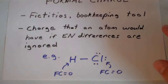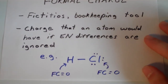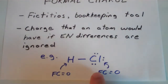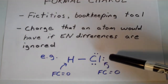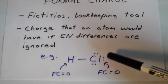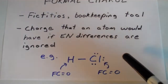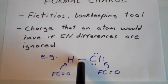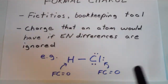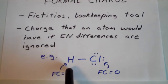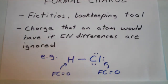Going back to the case of hydrogen chloride: the chlorine atom formally owns all of its lone pair electrons, but owns only one of the electrons shared between the two atoms. The hydrogen owns the other electron that is shared between the two atoms.